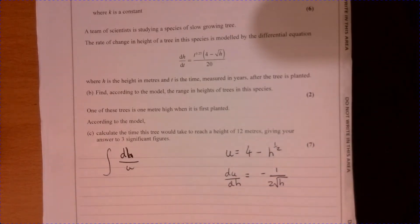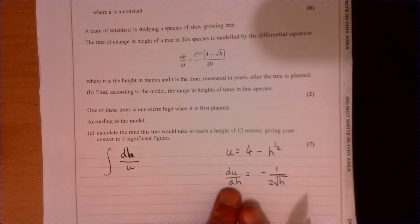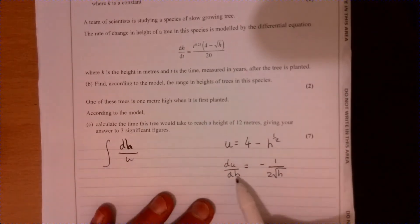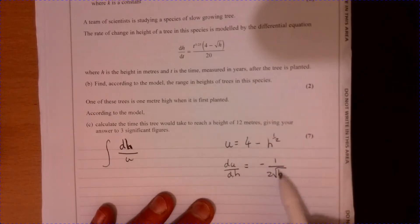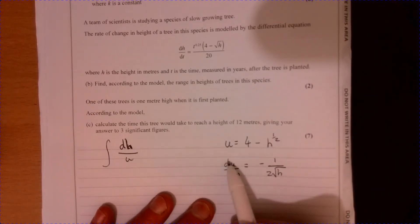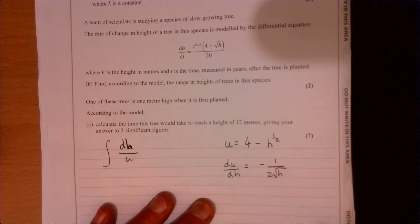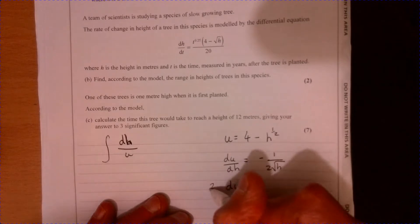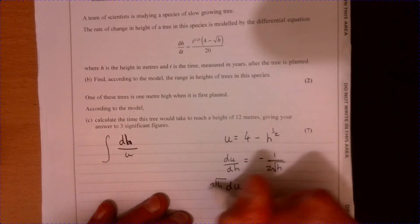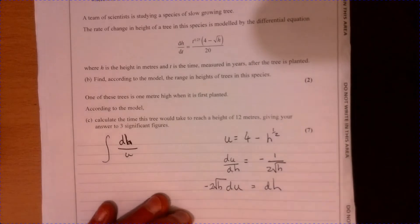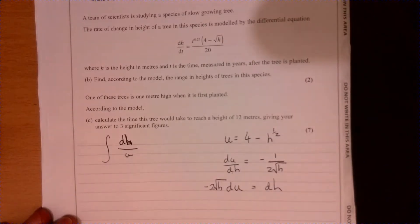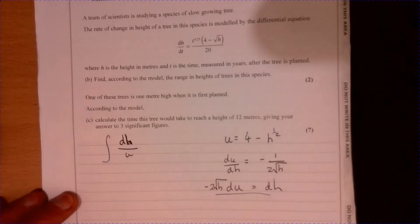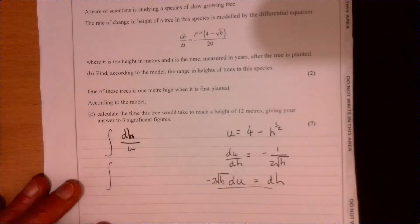Two times root h like that so we're going to need dh so we can use this over here. If we multiply by dh multiply by this over here and we're going to get a negative there as well. We're going to end up with that there the dh.